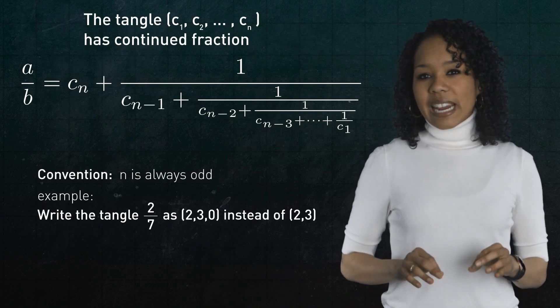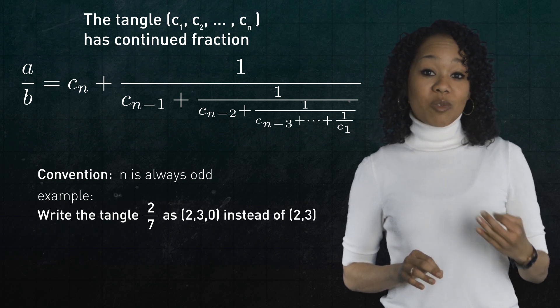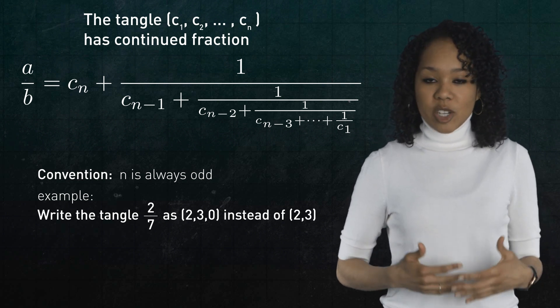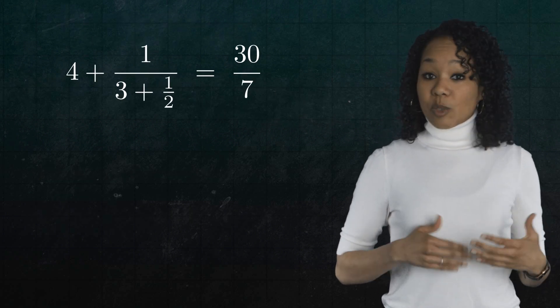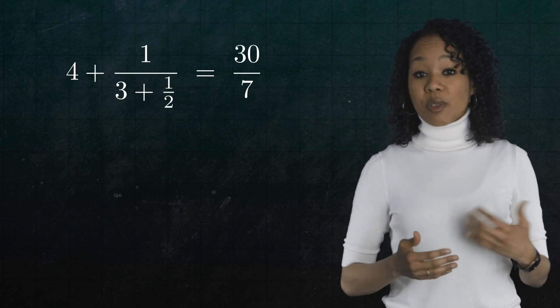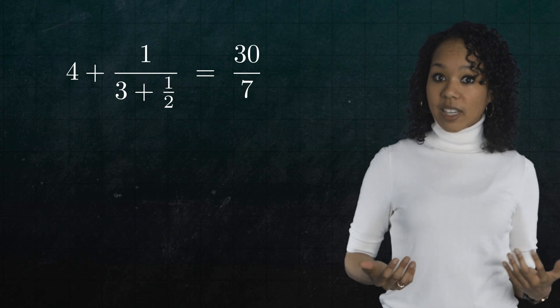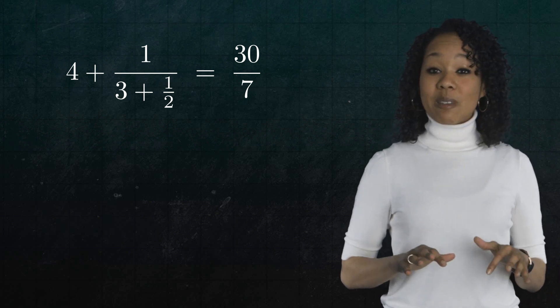And these numbers give us a continued fraction. Now, here's the cool thing. You might know that there's more than one way to write a rational number as a continued fraction. For example, 30 over seven is, as we saw, four plus one over three plus a half. But, and you can check, it can also be written like this.